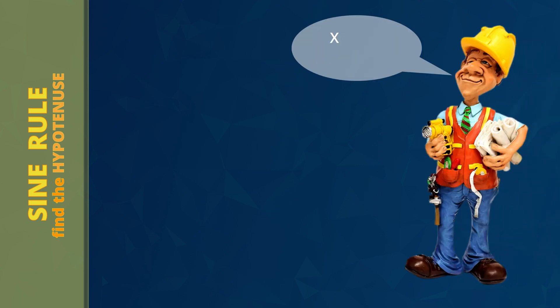Here's a trick to remember what to do when X is down on the bottom of the fraction: if X is down, you divide in the next line. D for down, D for divide.